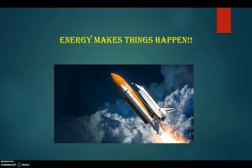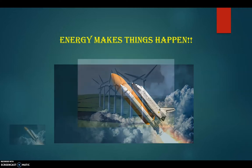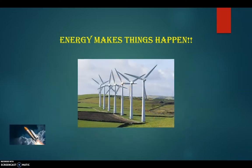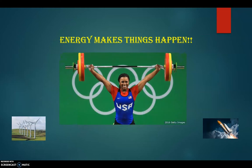To launch the space shuttle into orbit requires energy, which comes from the rocket fuel. To turn the turbines on those giant windmills out on the delta, energy comes from the wind. And living things, like an Olympic athlete, need energy in order to lift those heavy weights.